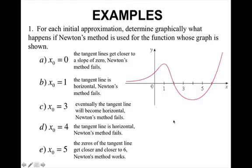At x₅, the zeros of the tangent line get closer and closer to six. So this time Newton's method does work. So if I was to draw little tangent lines here, each tangent line would get closer and closer to this zero.